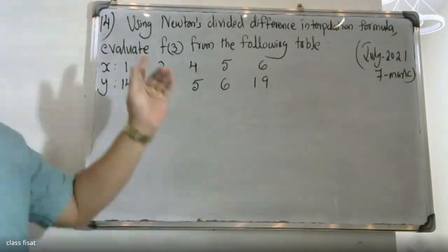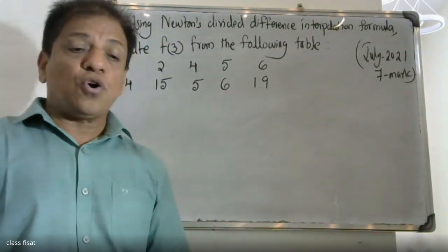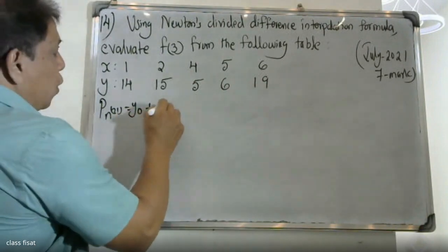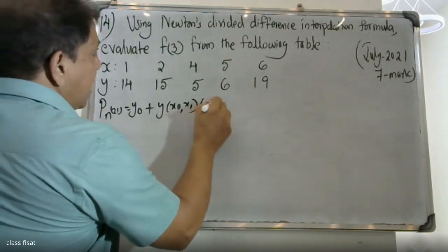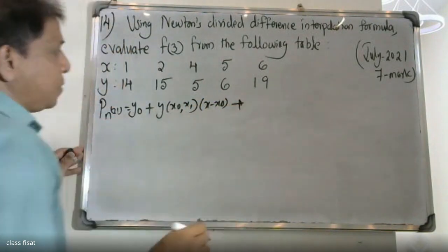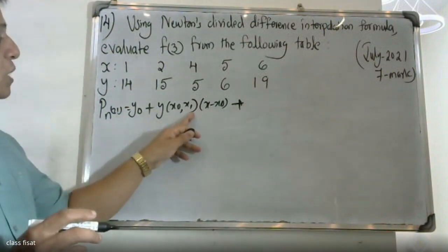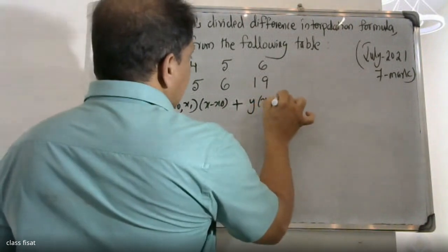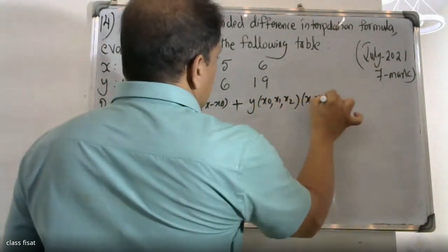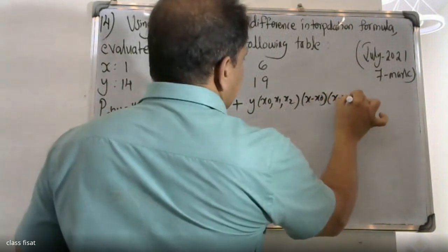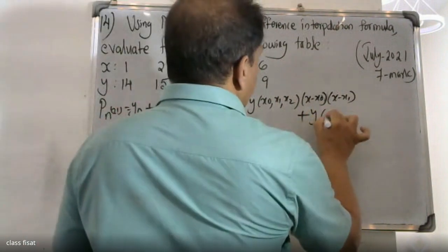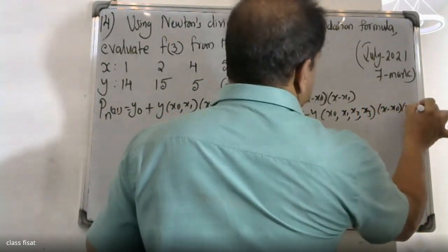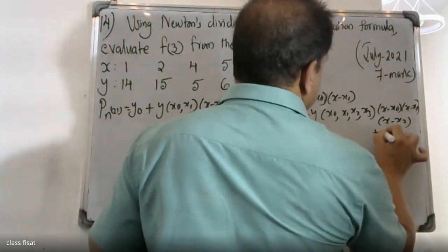Newton's divided difference interpolation formula: P(x) is equal to y-naught plus y(x0, x1) into (x minus x0) plus y(x0, x1, x2) into (x minus x0)(x minus x1) plus y(x0, x1, x2, x3) into (x minus x0)(x minus x1)(x minus x2) plus etc.